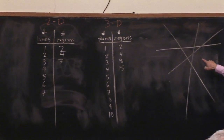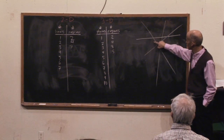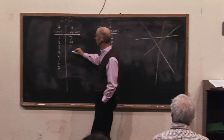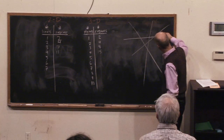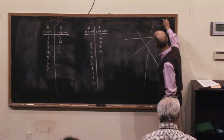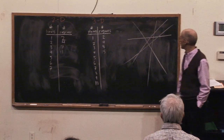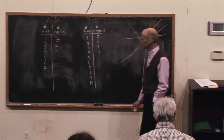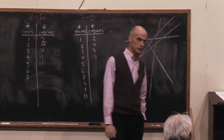One, two, three, four, five, six, seven, eight, nine, ten, eleven. Fifth line — let's see if I can do this. I want to try to make it intersect all of them. Here I go. Count it up. Sixteen.